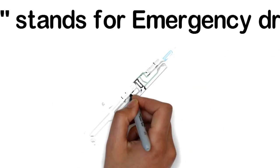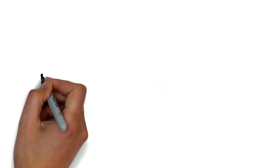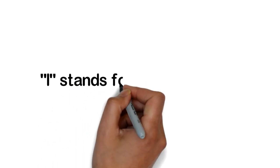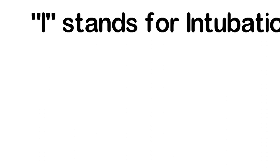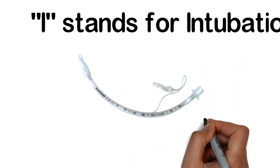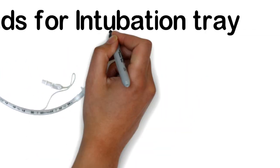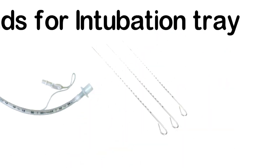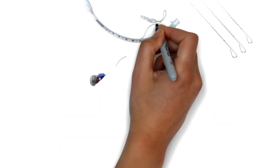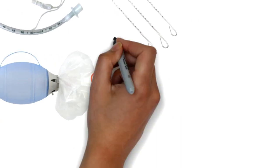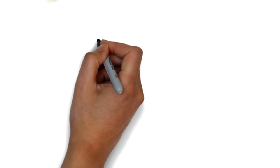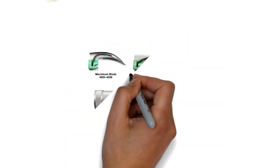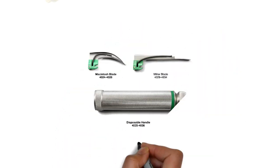I for intubation tray, which contains endotracheal tubes of different sizes—one size greater or lesser are kept in the intubation tray. Other things in the intubation tray are a stylet and Ambu bag with resuscitation bag and masks. Another thing that should be in the intubation tray is a laryngoscope with blades, available in different sizes for different age groups.